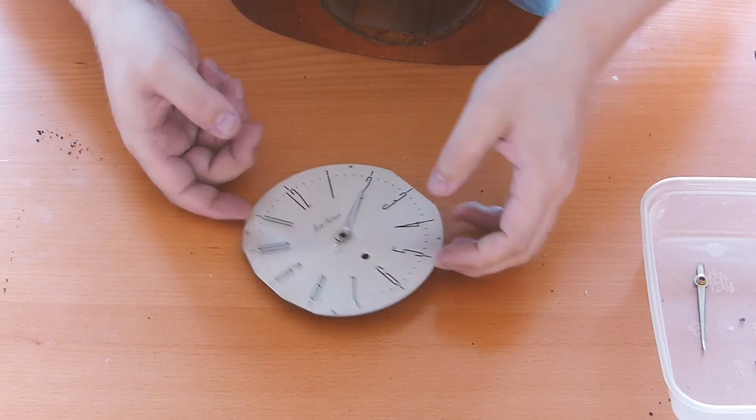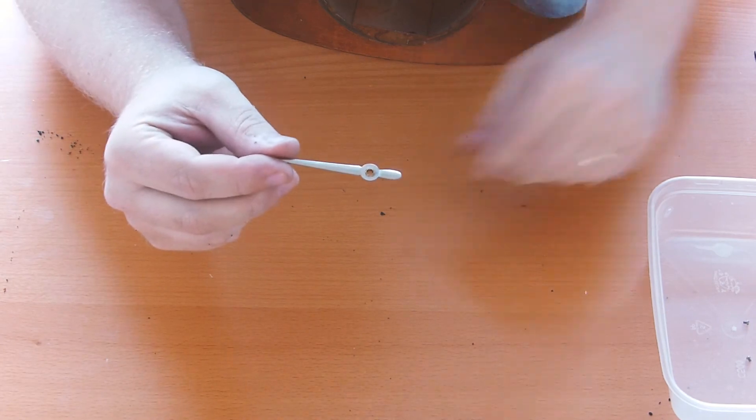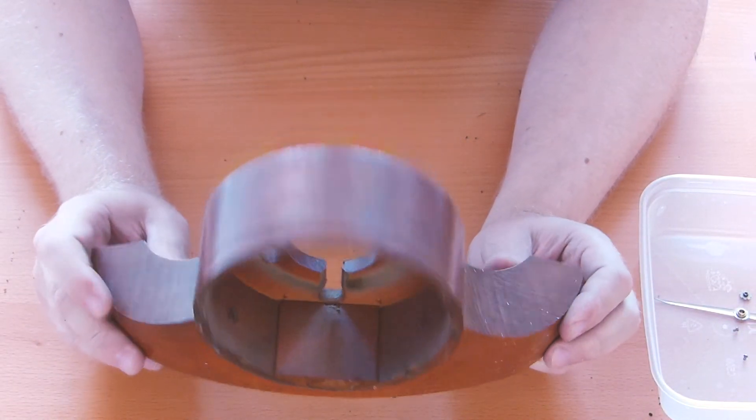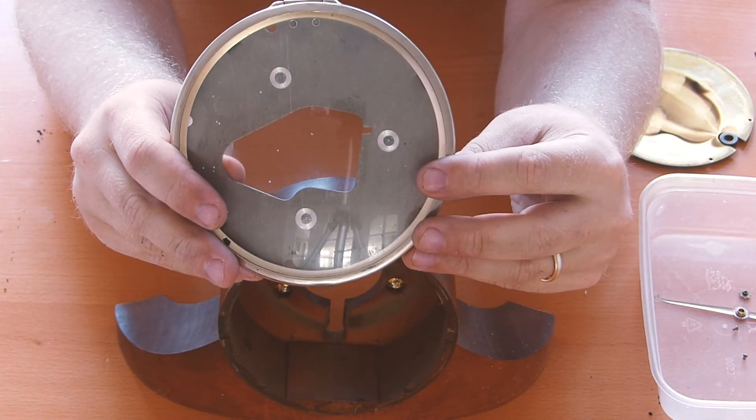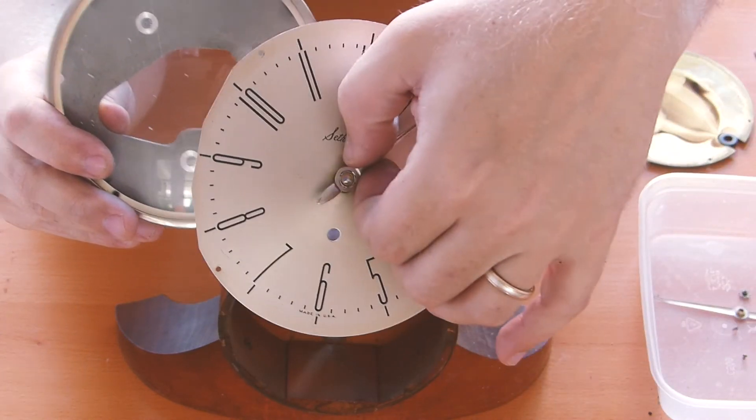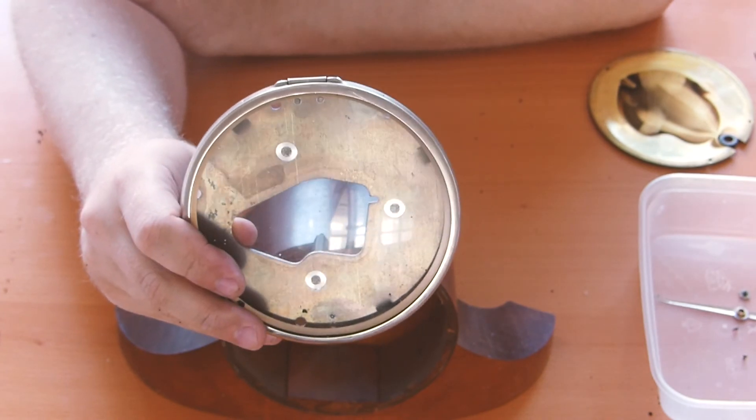So finally after taking it all apart that left us with the clock face, the hands, the actual outside wooden part of the clock and then the bit that held the clock face with the mount on the back that we'd be able to mount our new servo mechanism to. That's everything we needed really and I then started to form a plan how we could go and how it would all work.